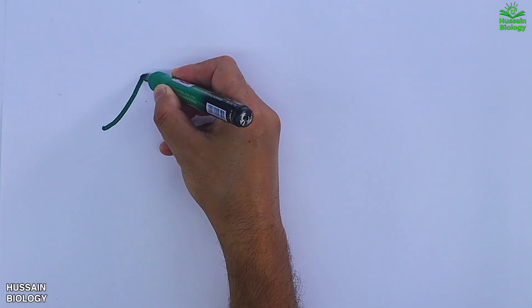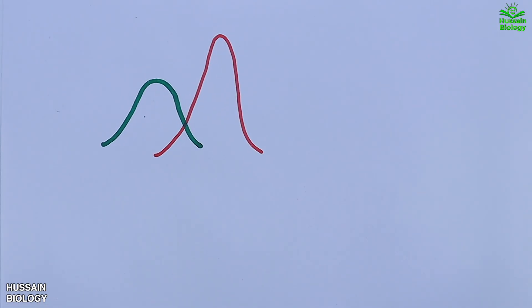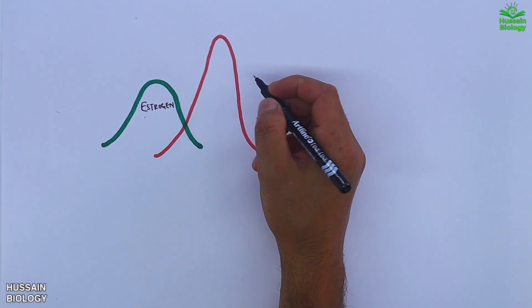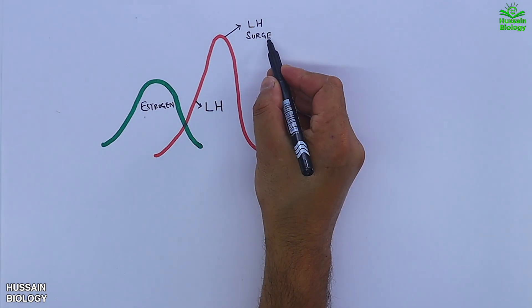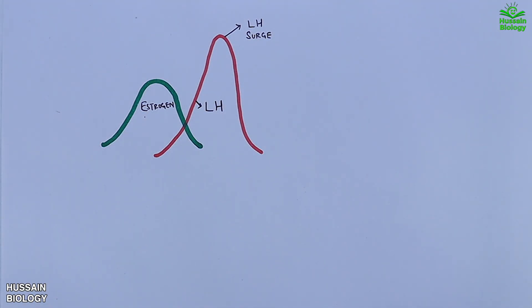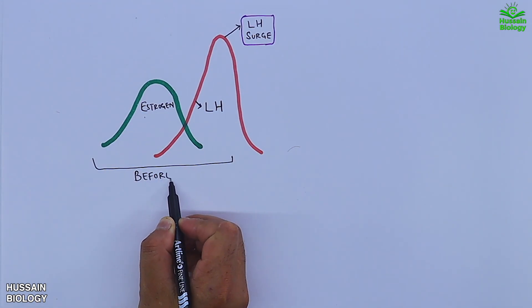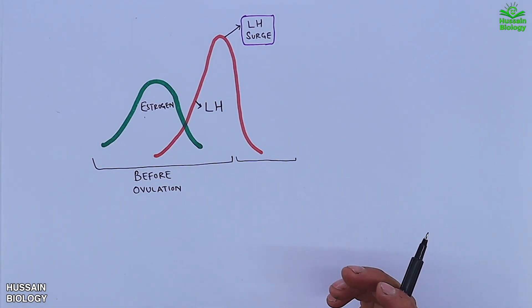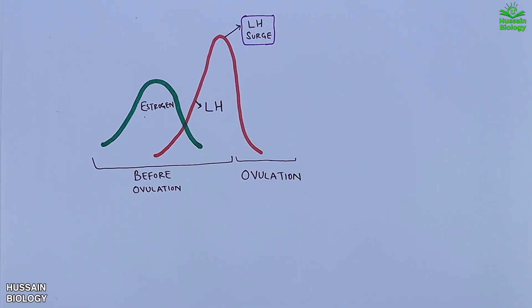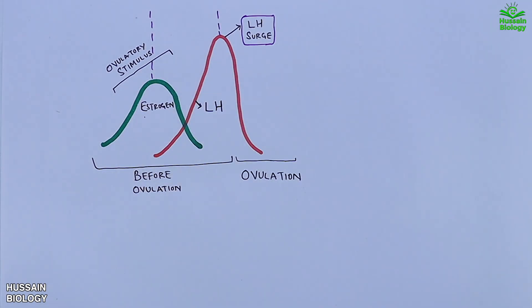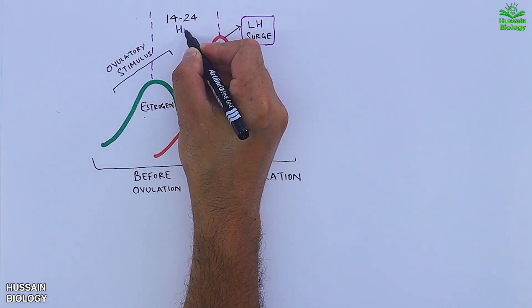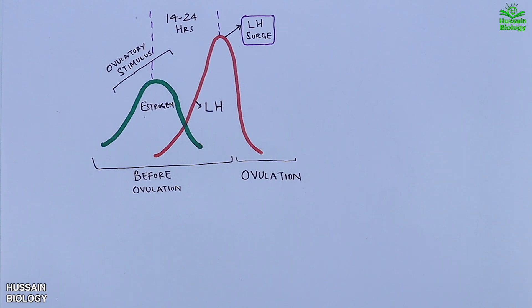In this diagram we have two hormones shown: one with the green line is estrogen, and the other is LH, that's luteinizing hormone. This peak depicts the LH surge. On the left is the period before ovulation, and the LH surge occurs during ovulation. We see estrogen peaks first, and this estrogen provides the ovulatory stimulus. Then, after 14 to 24 hours, we get the LH surge, followed by ovulation.